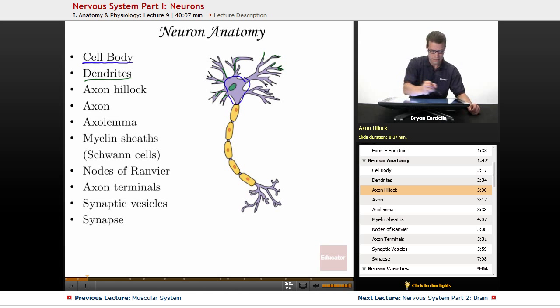The axon hillock is basically the connecting portion between the cell body of the neuron and the axon, which is coming up in a bit. So right here, that's a thickened portion that connects the cell body and axon.